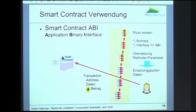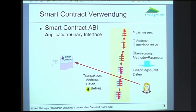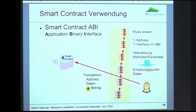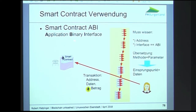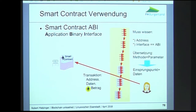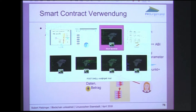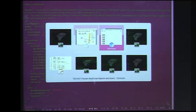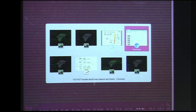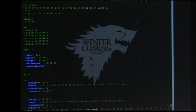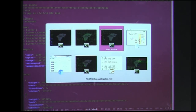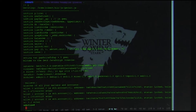Wie kommuniziert jetzt der einzelne Teilnehmer mit so einem Smart Contract? Was muss man wissen? Man muss erstens mal seine Adresse wissen. Dann muss man wissen, welche Daten der Transaktion geschickt werden. Und den Betrag natürlich. Und das nennt man Application Binary Interface — zu welcher Adresse gehören welche Daten? Das sind die zwei Dinge, die ich brauche, um mit meinem Smart Contract zu kommunizieren. Das möchte ich Ihnen jetzt auf der Test-Chain zeigen.